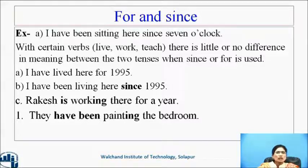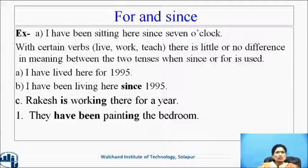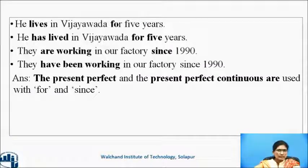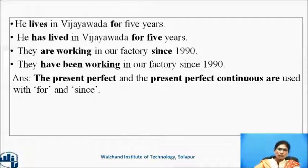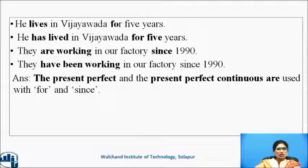For and since. 'I have been sitting here since 7 o'clock.' With certain verbs like live, work, and teach, there is little or no difference in meaning between the two tenses when 'since' or 'for' is used. For example: 'I have lived here for 1995' — 'I have been living here since 1995.' 'He lives in Vijayawada for 5 years' is corrected to 'He has lived in Vijayawada for 5 years.' 'They are working in our factory since 1990' is corrected to 'They have been working in our factory since 1990.' Present perfect and present perfect continuous are used with 'for' and 'since.'